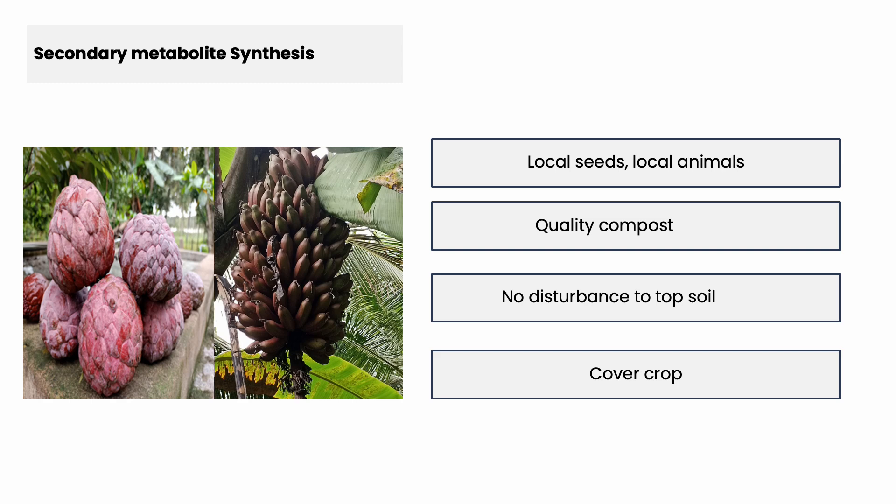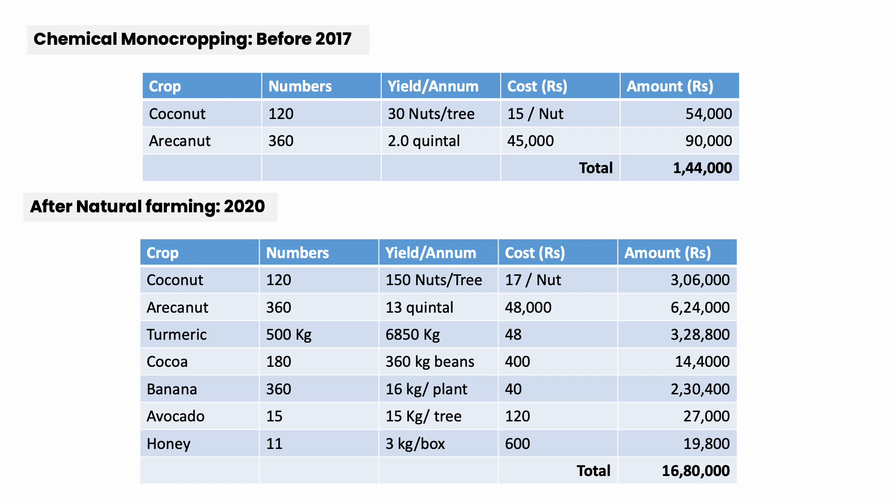These are four different sectors for understanding nutrition from a natural farming perspective. Ravish before 2017 was producing 120 to 360 coconuts and his economics were 1,44,000 rupees. His production costs meant he was losing money from agricultural income. Now with this intervention over three to four years, coconut production at 120 to 360 is maintained as constant, and we have integrated turmeric, cocoa, banana, avocado, and honey. Apart from biomass and biodiversity crops, we are attaining 150 nuts and 13 quintals of turmeric. Earlier it was only 2 quintals.